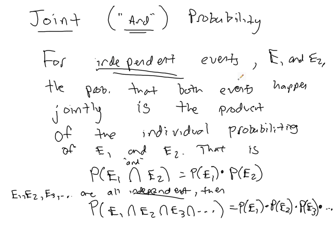For independent events — let's call them E subscript 1 and E subscript 2 — the probability that both events happen jointly is the product of the individual probabilities of E1 and E2. That is, the probability of E1 AND E2 (this symbol is basically the AND operator) equals the probability of E1 times the probability of E2. Similarly, if you have a bunch of independent events, the probability of them happening jointly is the product of all the probabilities. You just need to know the probability of each event individually to get the joint probability.